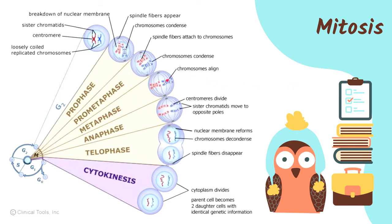During metaphase, the chromosomes align at the center with equal distance of the spindle fibers on opposite ends of the centrioles. Then during anaphase, the centromeres divide and the chromosomes are no longer one structure but two sister chromatids. During anaphase, the spindle fibers pull the sister chromatids towards opposite poles — towards opposite centrioles.